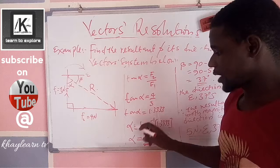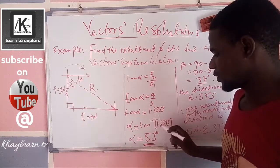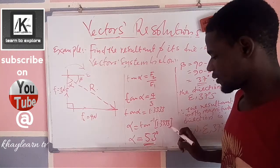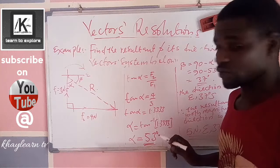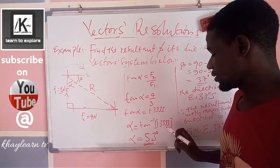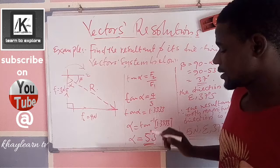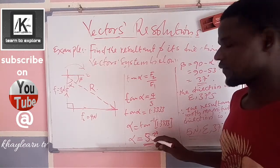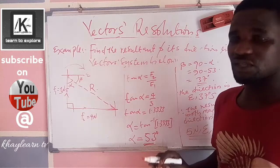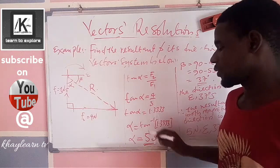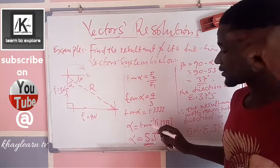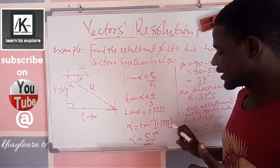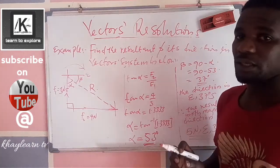Now, we have alpha to be tan inverse of 1.3333, up to 4 decimal places. It is a recurring decimal, what we terminate to be just 4 decimal places. So, after calculating this, we get alpha to be 53 degrees. Once you punch this, tan inverse 1.3333, it's going to be 53 degrees approximately.